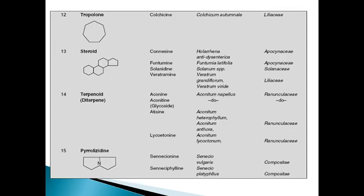The next class is proaporphine alkaloids. These are alkaloids which do not have nitrogen in their heterocyclic ring — there is no presence of nitrogen in this group. An example is colchicine. Colchicum autumnale is the botanical origin and Liliaceae is the family.